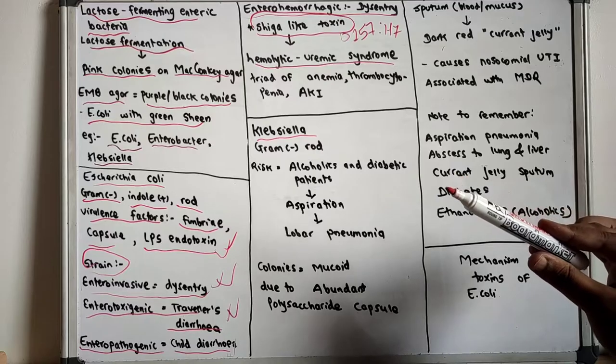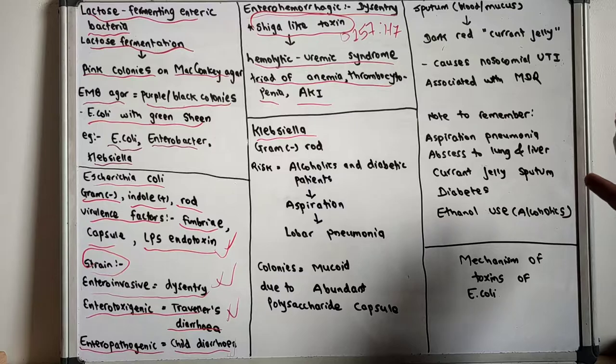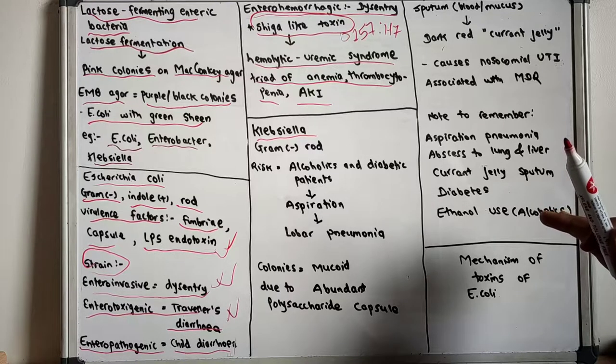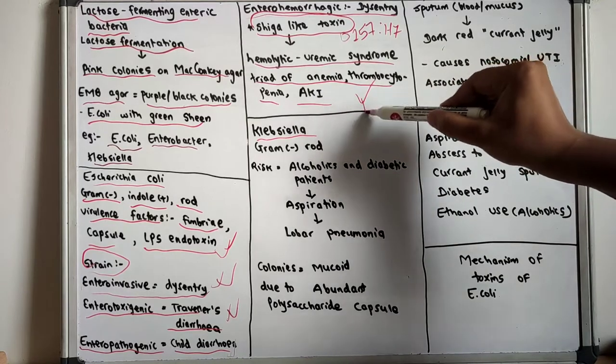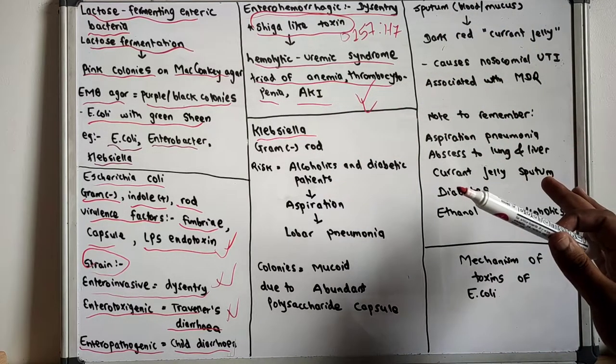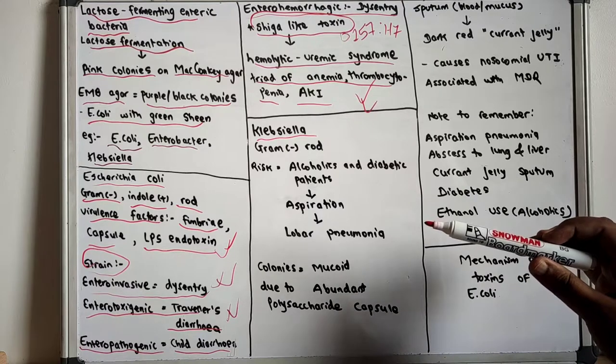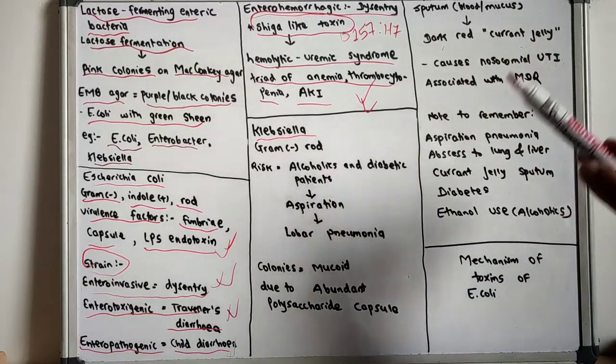The hemolytic uremic syndrome consists of a triad of anemia, thrombocytopenia, and acute kidney injury. What happens is that it causes various disorders by microthrombi forming on the damaged endothelium, thus causing mechanical hemolysis.